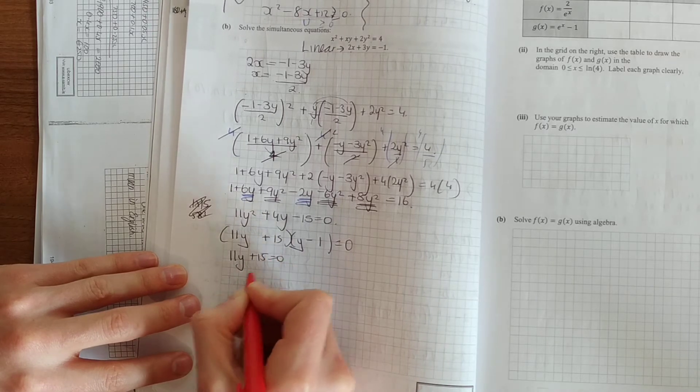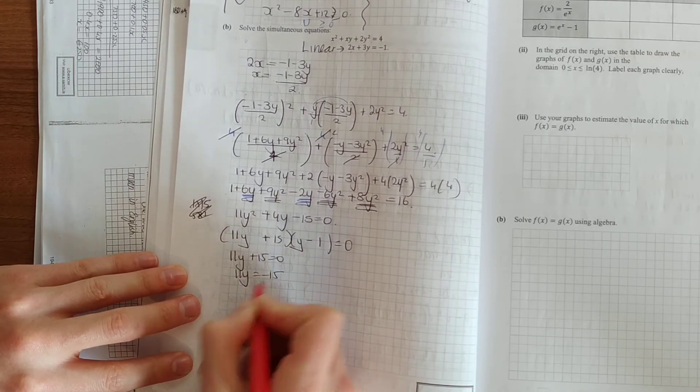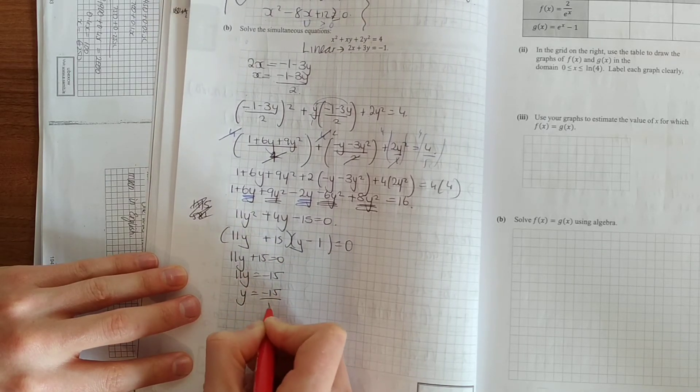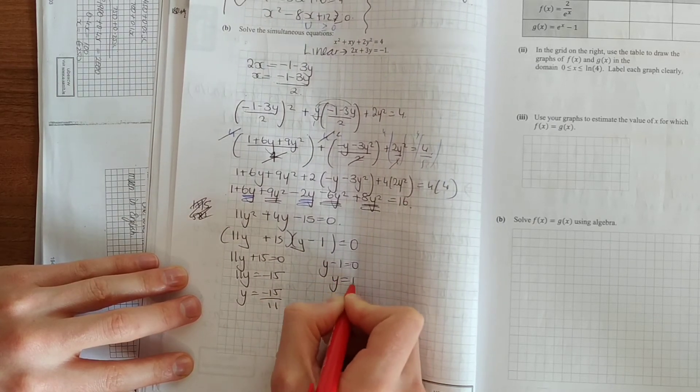So 11y plus 15 is equal to 0. And over here, y minus 1 is equal to 0, and y is equal to 1.